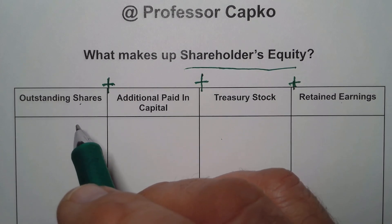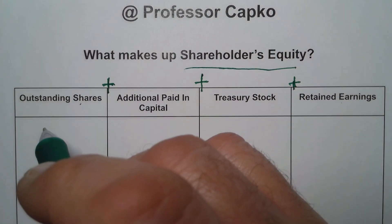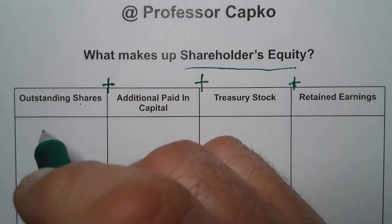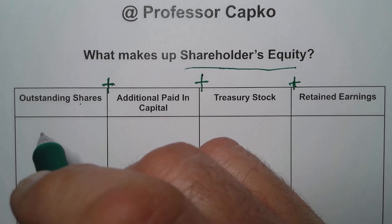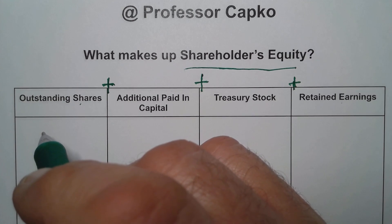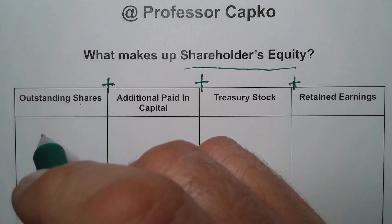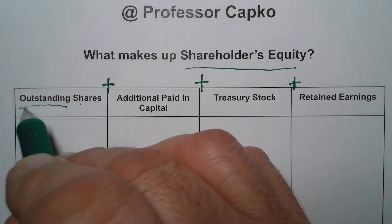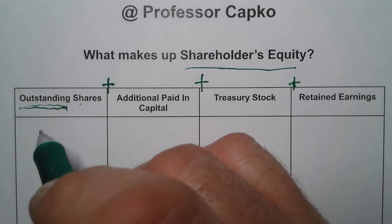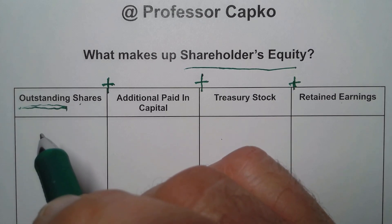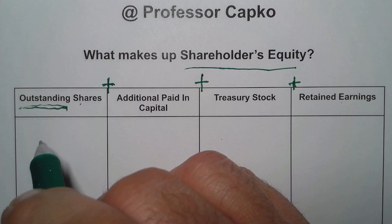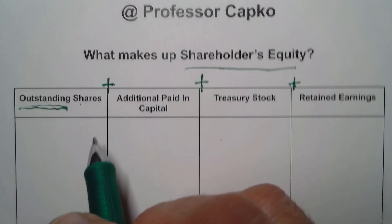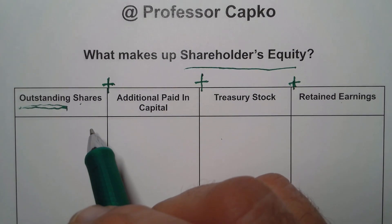First, outstanding shares. This means outstanding shares of stock in the company that are owned by investors, owners, people in the market, or just owners that are insiders. It doesn't matter the status of the owners — these shares have been issued, authorized by the board of directors, and authorized by the charter for the corporation, and they have been issued or bought in exchange for some other consideration.